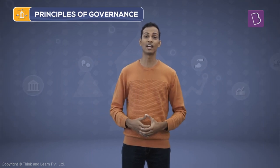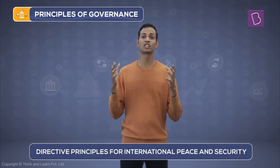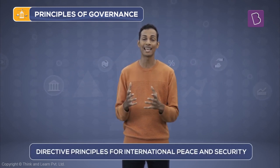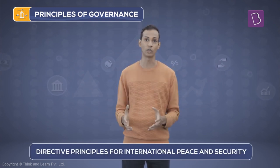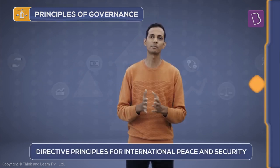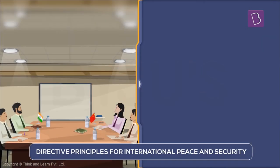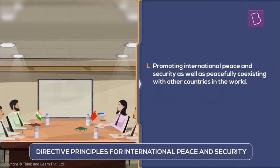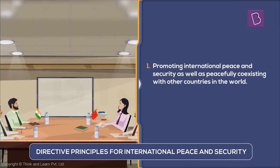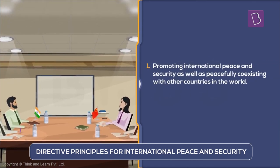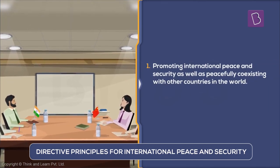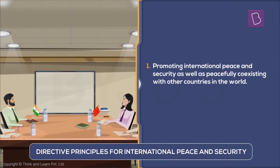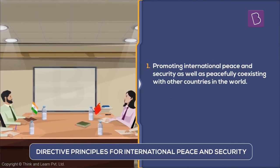The next set of principles we are going to talk about are principles for international peace and security. These principles talk about promoting international peace and security, as well as peacefully coexisting with other countries in the world.